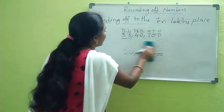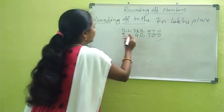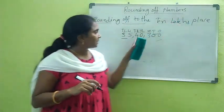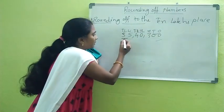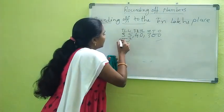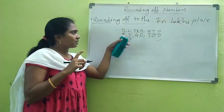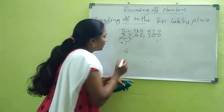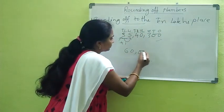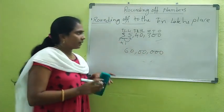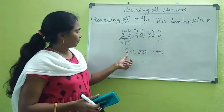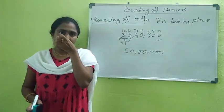Now suppose the number is fifty-five lakhs, forty thousand, three hundred. The ten lakhs digit is five. The immediate right digit — the lakhs place — is also five. Five is equal to five, so add one to the ten lakhs digit: five plus one equals six. Make remaining digits zero. The rounded value is sixty lakhs.